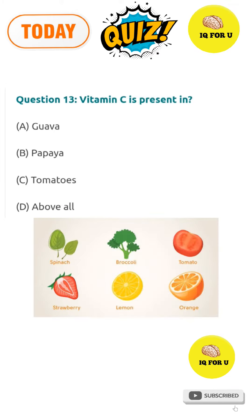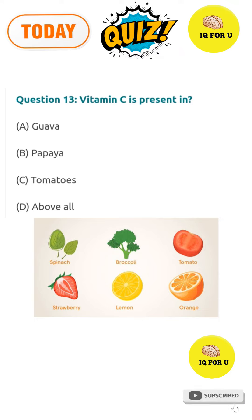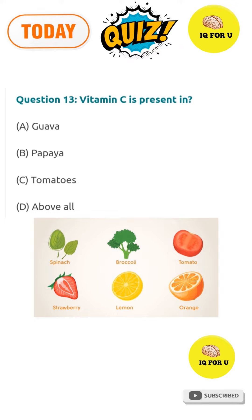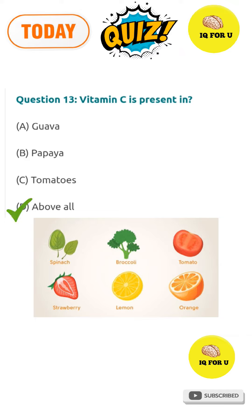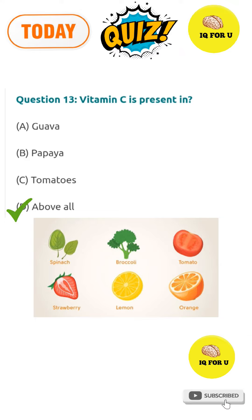Next question. Vitamin C is present in — option A: guava, option B: papaya, option C: tomatoes, option D: all of the above. The right answer is option D: all of the above.